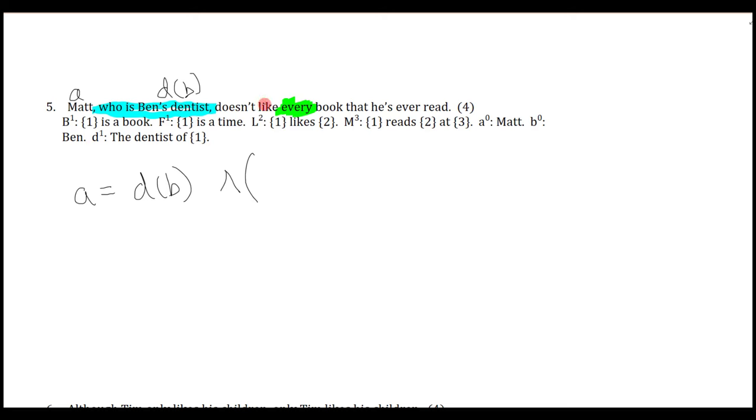Anyway, the way to sort of interpret this is if I don't like every book that he's ever read, the most natural way to interpret that is just to say there is a book that Matt has read that he doesn't like. Because that's what it means to say I don't like every book I've ever read. I might have liked some, but I certainly didn't like them all. So the way I would do this is I would just say there is something that is a book, and it also has some other property, that Matt has read.